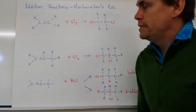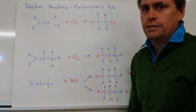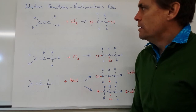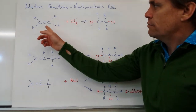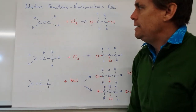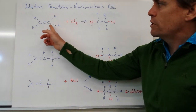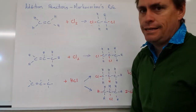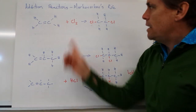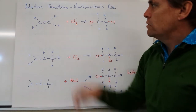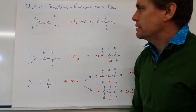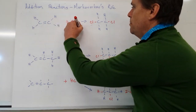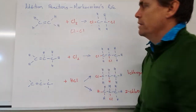Let's have a look at addition reactions and how we can predict what products are formed. In the first reaction, we've got a symmetrical alkene — ethene — and a symmetrical molecule that's going to react with it: chlorine bonded to chlorine.